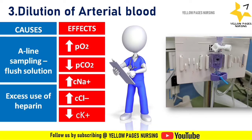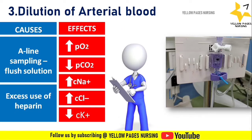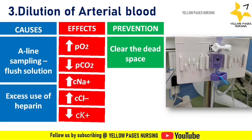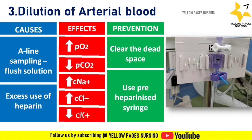To prevent this, clear the dead space. Patients who have an arterial line connected with a pressurized saline bag require frequent flushing to check accurate blood pressure. In such cases, remove a certain amount of blood from the line and discard it before collecting the ABG sample. Use of pre-heparinized syringes also prevents dilution of arterial blood.